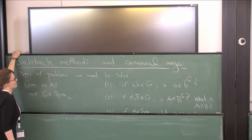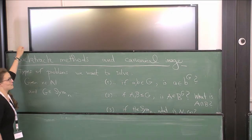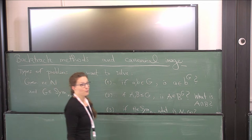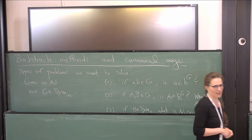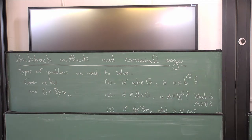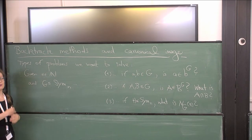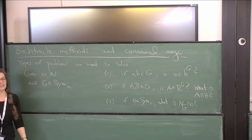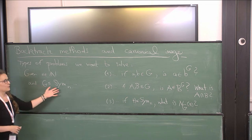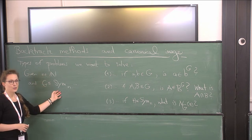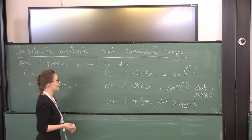Let me begin with some types of problems that we want to solve. We want to solve them in permutation groups first, and we want to solve them permutationally, so we want to be fast. Suppose that you have a large number n and a subgroup of the symmetric group S_n, and now you want to solve problems of the following kind.